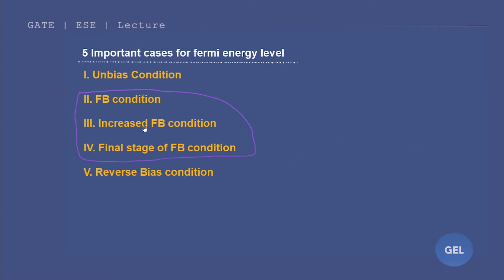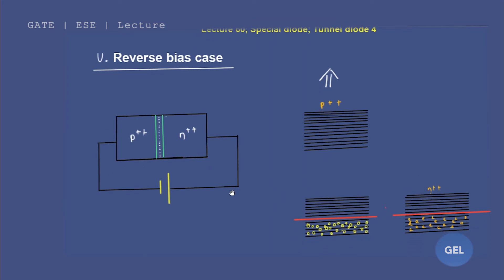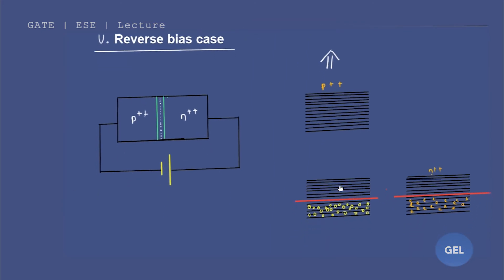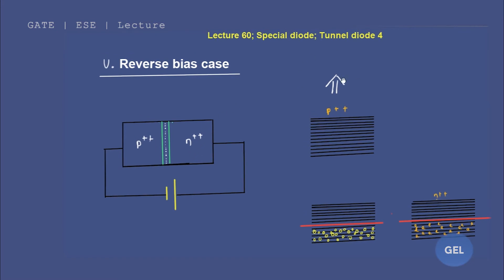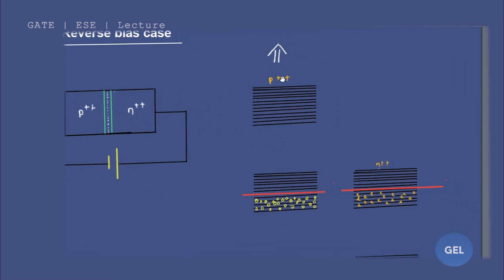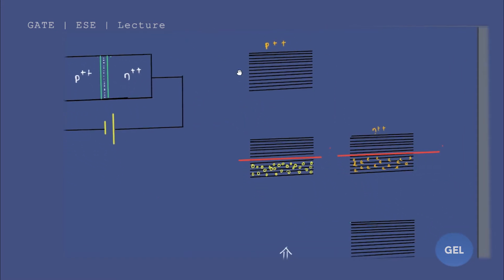We discussed the forward bias case. Now in this video lecture, we are going to discuss the reverse bias case. It's a very simple concept with a small amount of material. For the reverse bias case, we connect the p-side with the lower polarity and the higher polarity with the n-side. Since the doping concentration is high, this is the tunnel diode case. This is our unbiased case.